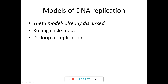Now we are going to talk about the models of DNA replication. There are basically three main models: the first is the theta model, which we already discussed; the second is the rolling circle model, found in the replication of plasmid DNA; and the third is the D-loop of replication, mainly found in mitochondrial DNA.